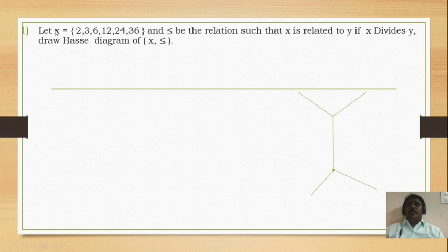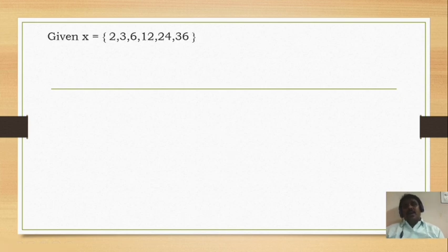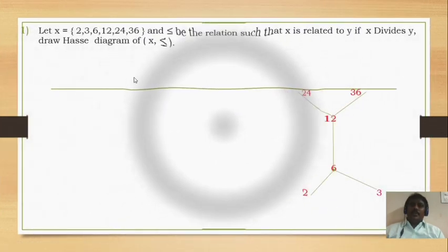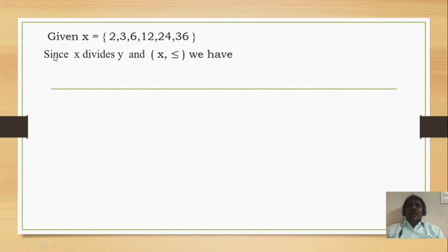Here a problem is given: Let X = {2, 3, 6, 12, 24, 36} and ≤ be a relation such that x is related to y if x divides y. Draw the Hasse diagram of (X, ≤). The condition is x ≤ and x divides y — meaning the remainder must be zero. First, we write the relation R based on the condition. Taking 2: 2 divides 2, 2 divides 6, 2 divides 12, 2 divides 24, 2 divides 36.